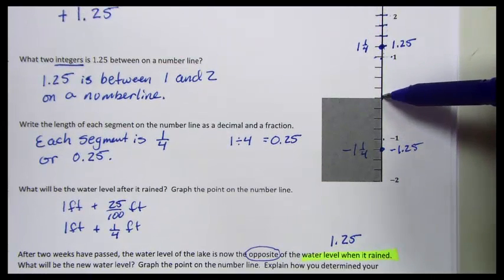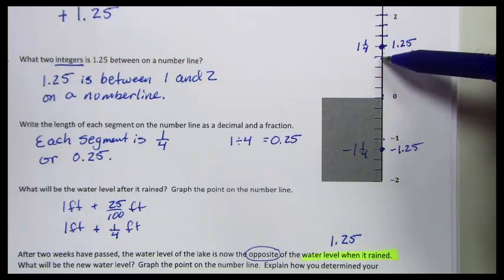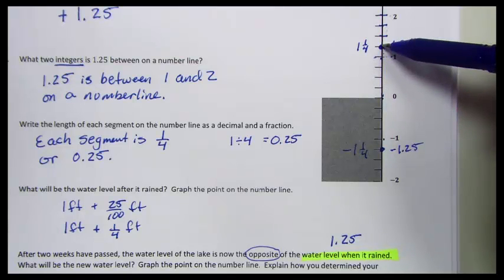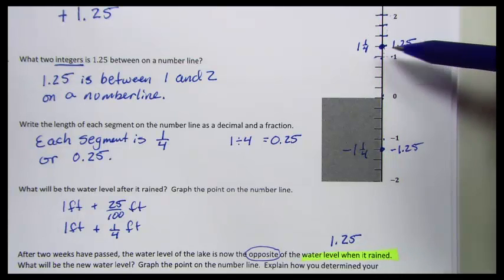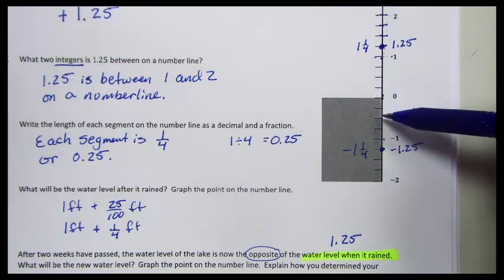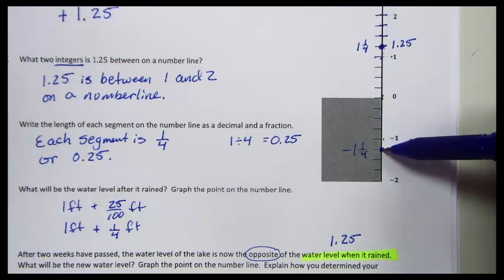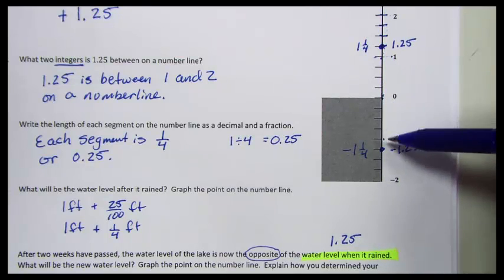Here's zero. We can confirm: one, two, three, four, five marks up from zero for positive one and one-fourth. The opposite is one, two, three, four, five marks down from zero for negative one and one-fourth.